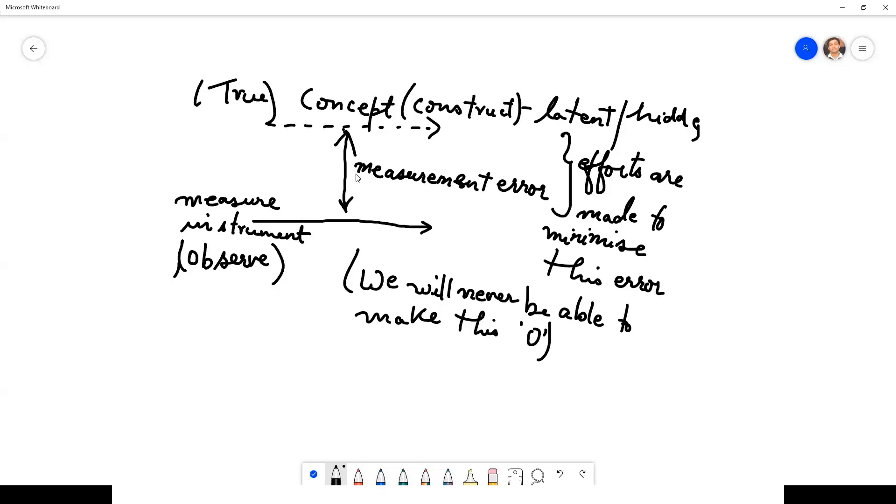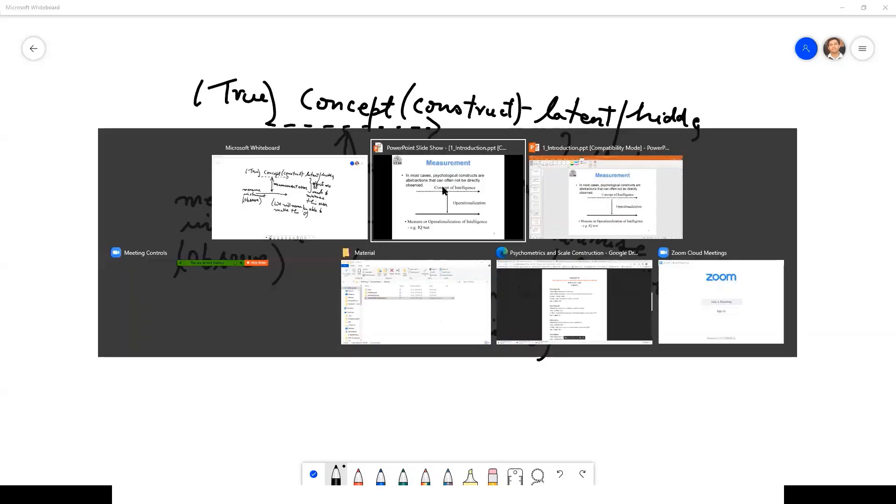So we say therefore in psychometrics, in measurement, in confirmatory analysis, or generally in psychometrics, we say that we can make efforts to minimize this but we may never be able to make this zero.